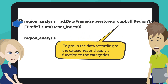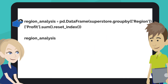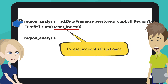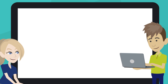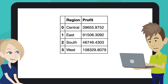Pandas DataFrame GroupBy function groups the data according to the categories and applies a function to the categories. Pandas reset_index method resets the index of a data frame. Click on the Play button or hit Shift plus Enter. We can see the table for the profit by region now.